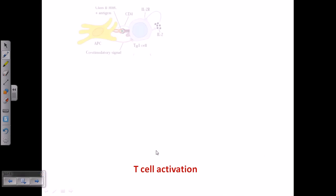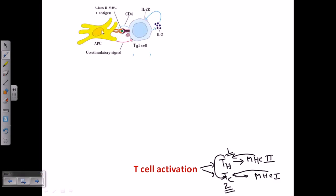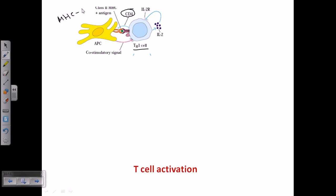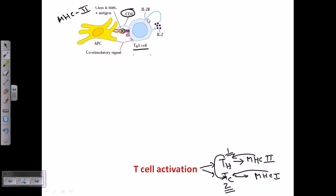Here we can see an antigen presenting cell holding a peptide sequence in green onto the surface of a class 2 MHC molecule. This antigen will be recognized by the T-helper 1 cell, which attaches to the MHC2-antigen complex via its T-cell receptor and co-stimulatory molecules like CD28 and B7. After these receptors attach, the T-helper cell becomes activated. The activation of T-helper always occurs first, via MHC class 2.